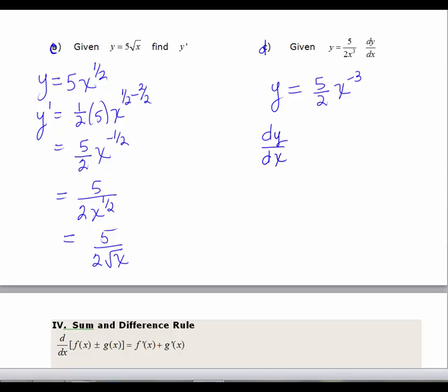So I'm going to take the negative 3. I'm going to multiply that by 5/2. That's going to be x to the negative 3 minus 1. So this is going to be negative 15/2 times x to the negative 4th. Again, if you're asked to leave your answer with positive exponents, you would write this as negative 15 over 2x to the 4th. And both of these are considered acceptable answers for your derivative.